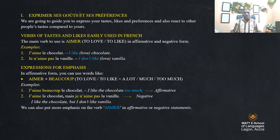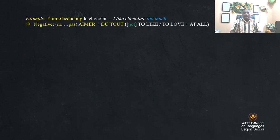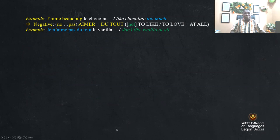We can also put more emphasis on the verb 'aimer' in affirmative or negative statements. Affirmative: 'aimer' plus 'beaucoup' — to like or love a lot, much, or too much. Example: 'j'aime beaucoup le chocolat' — I like chocolate very much. Negative: 'ne pas' and 'ne plus du tout' — not to like at all. You say: 'je n'aime pas du tout la vanille' — I don't like vanilla at all.